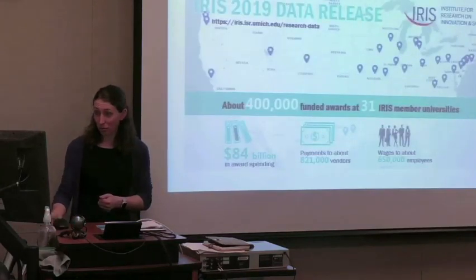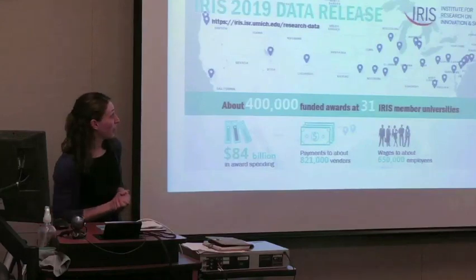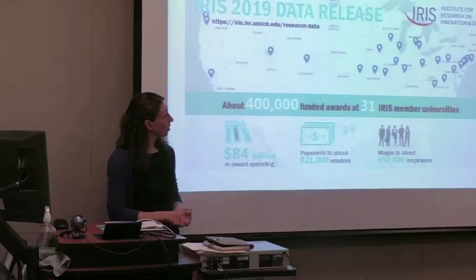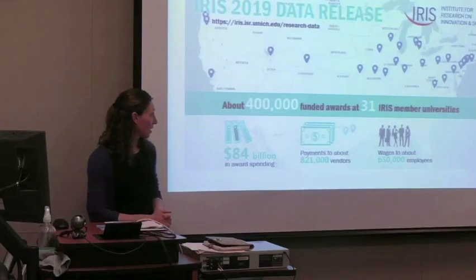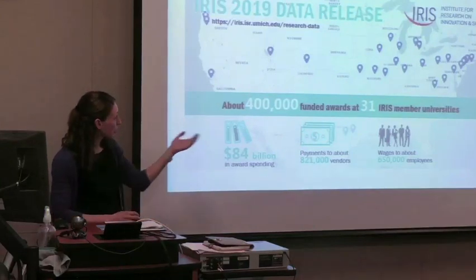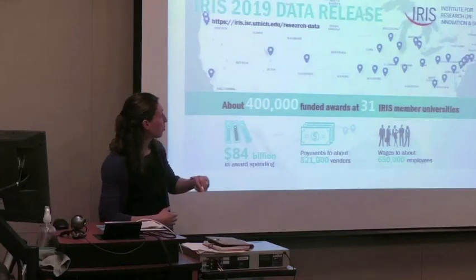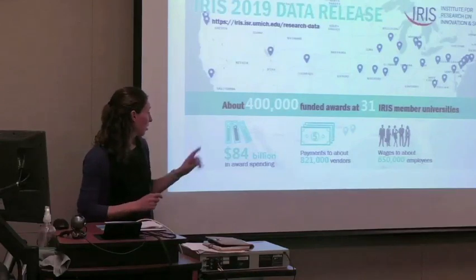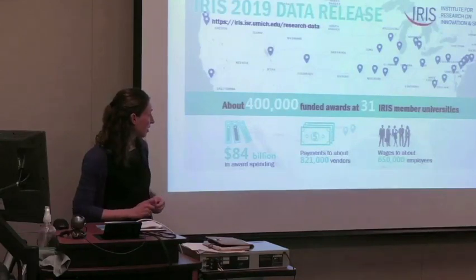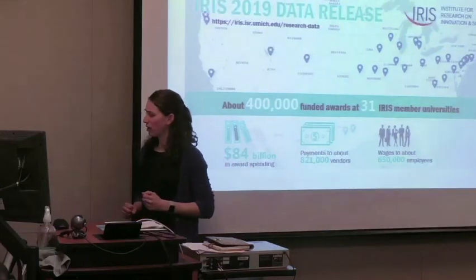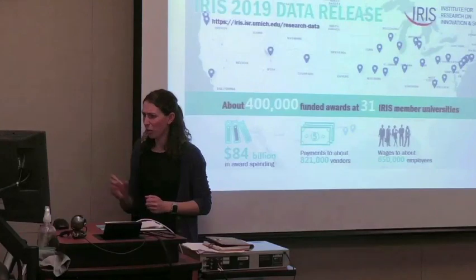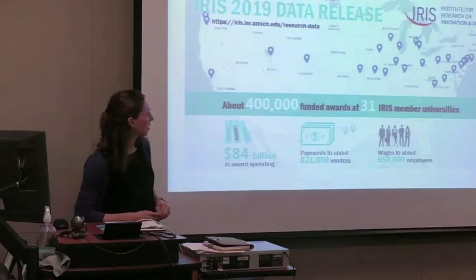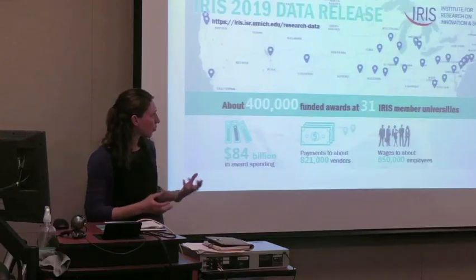Moving on to the data release itself: as mentioned, we just released our third annual data release. Our numbers right now — we're up to 31 member universities in the data, representing about 400,000 funded awards, which is $84 billion in award spending. That's almost double some of last year's figures — it was 61 or 62 billion in award spending last year. We're getting more and more data all the time, which is really exciting.